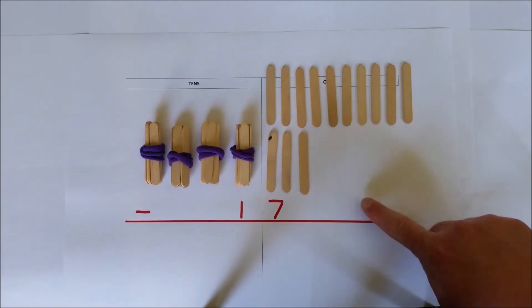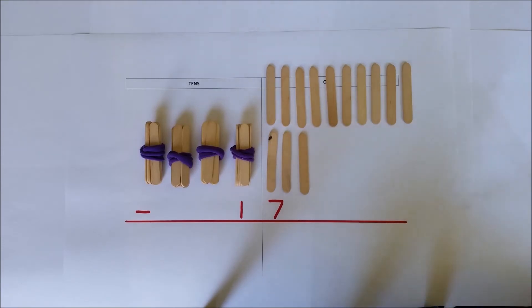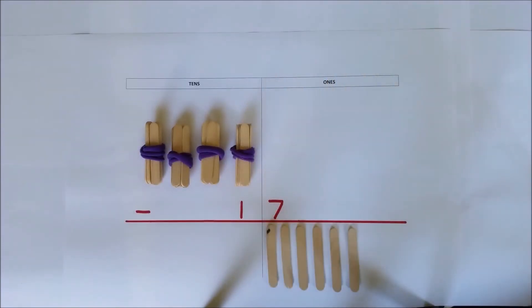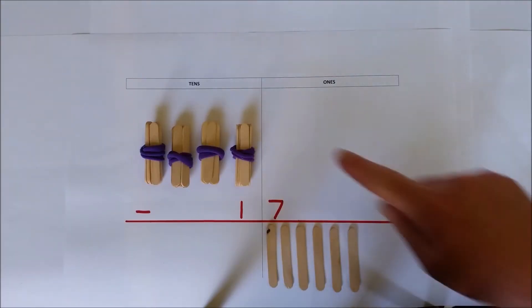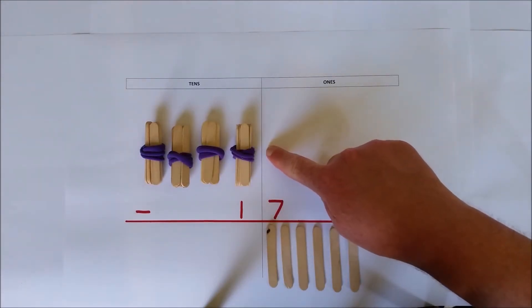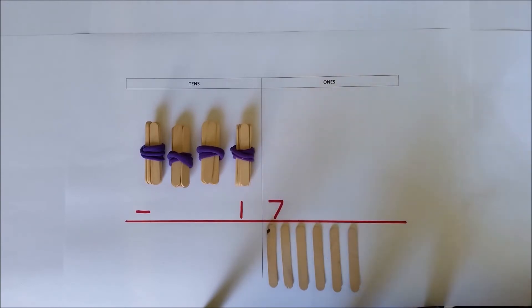Thirteen ones take away seven ones is six ones. Subtract the tens. Four tens take away one ten is three tens. There's no need to rename.